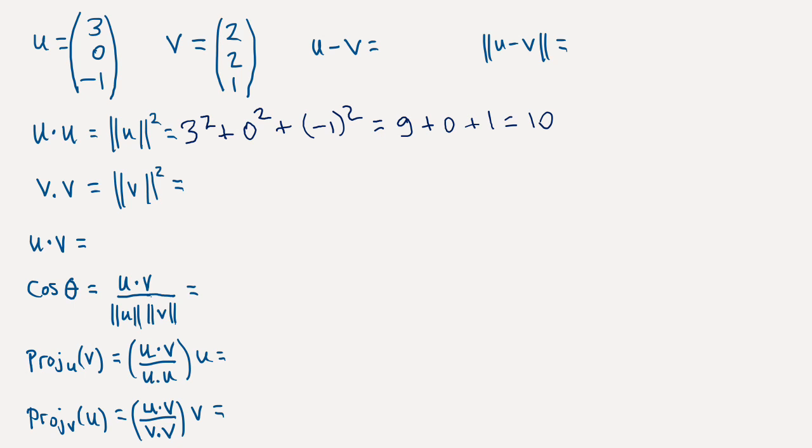Let's do the same thing with v, so the norm of v squared. So this time we'll have 2 squared and another 2 squared and 1 squared. So we'll have 4 and 4 and 1 comes to 9.